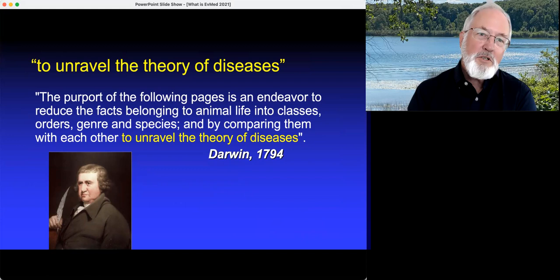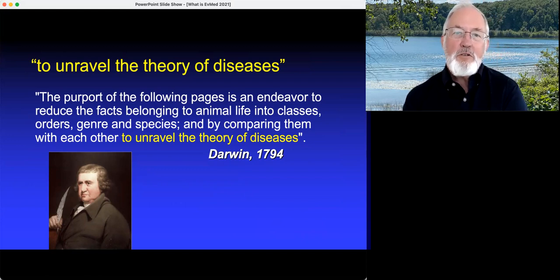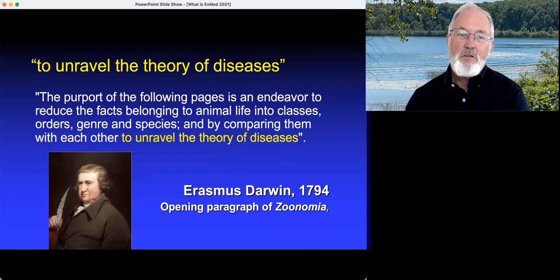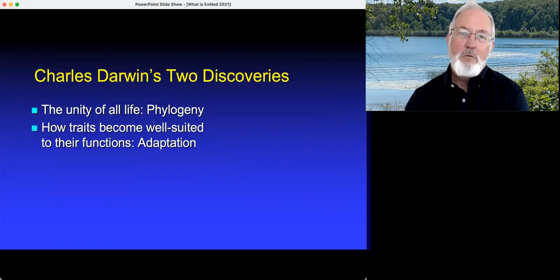Here's another Darwin. In 1794, he tries to unravel the theory of diseases by reducing the facts belonging to animal life into classes, orders, genres, and species, and comparing them to each other. These are the real origins of the basic idea of natural selection with Charles Darwin's grandfather, Erasmus Darwin. But it was Charles Darwin who really taught us that we could see all life as deriving from a single source—that is phylogeny—and a second discovery that natural selection helps to explain why traits are so well adapted for their purposes.